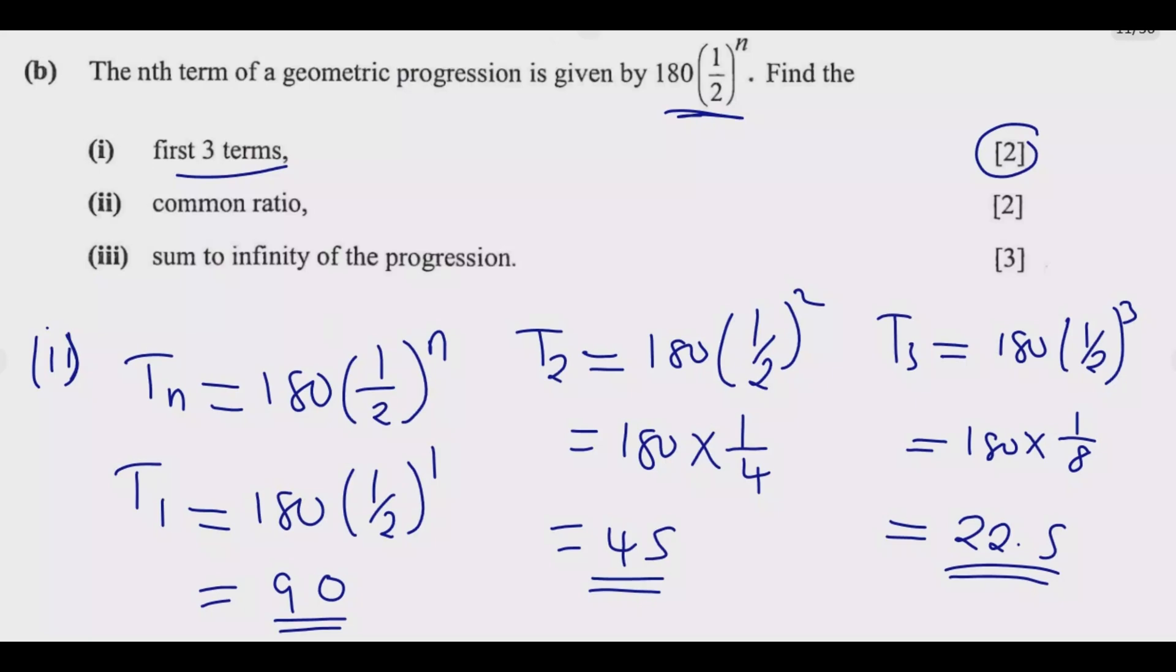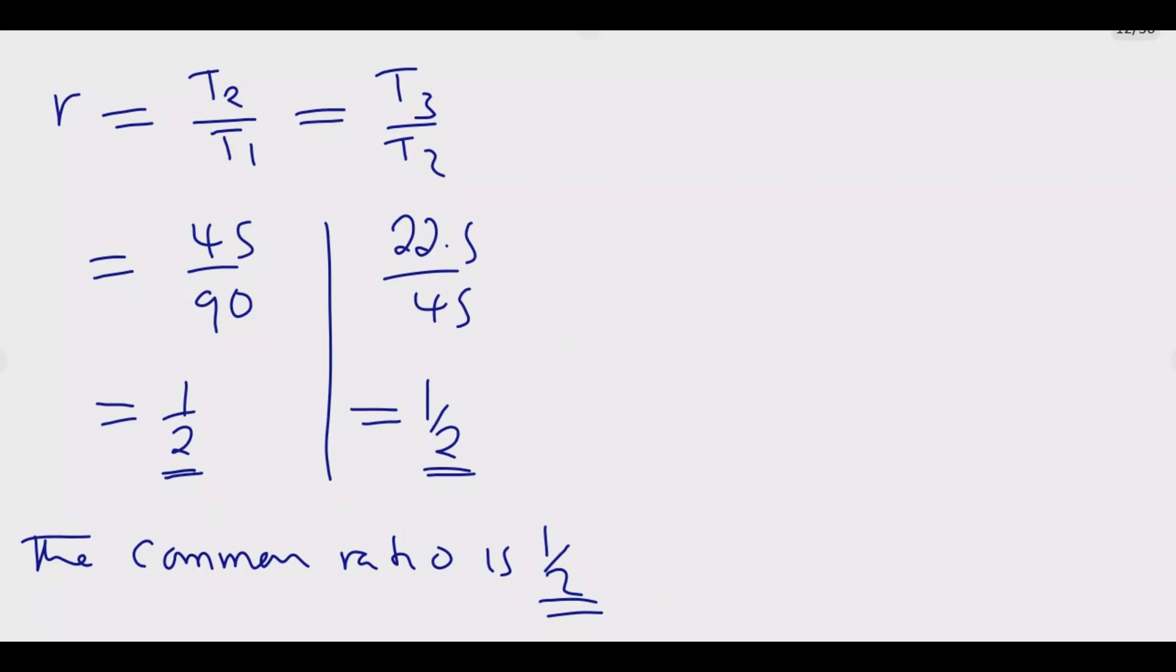Then (iii), sum to infinity of the progression. The sum to infinity of the progression will be determined by the value of r which is the common ratio. So if the common ratio is less than 1, which is the case in this case, you can also find this information on the first page of the equation paper.